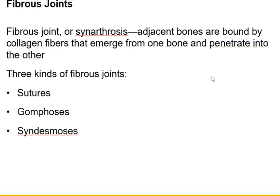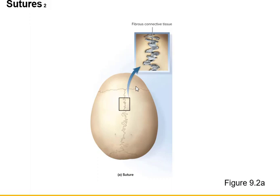Moving on to the second type of joints — fibrous joints, also known as synarthroses. In these, the bones are held together by collagen fibers. There are three kinds of fibrous joints: sutures, which we mentioned on the skull; gomphoses; and syndesmoses. Here's a picture of the suture lines — you have the coronal suture, the sagittal suture, the lambdoid suture, and the squamous suture, with fibrous connective tissue holding them together.